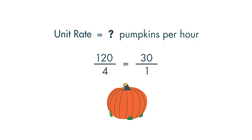So, our unit rate is 30 over 1. Now we know the unit rate is 30 pumpkins for every one hour the farmer harvests.